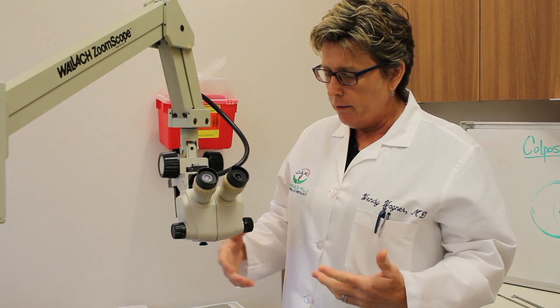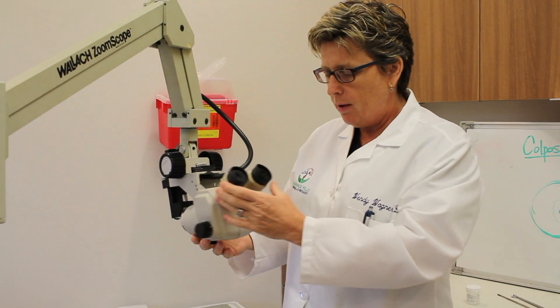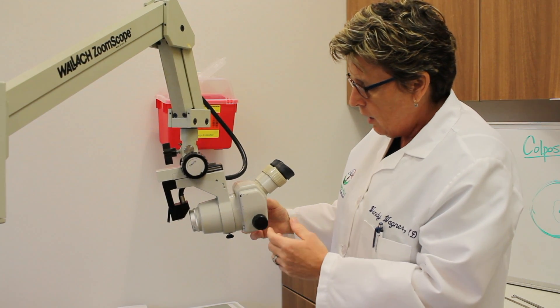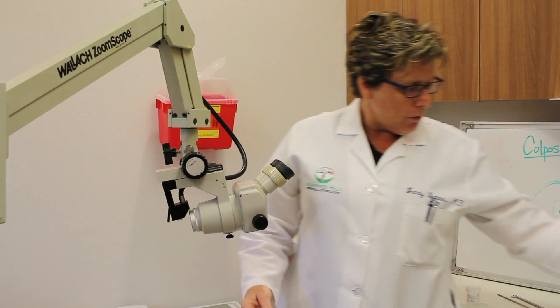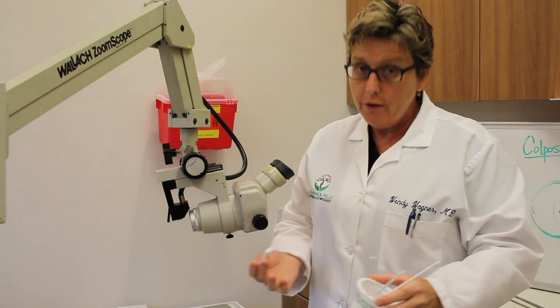Colposcopes look a number of different ways. However, they all have a similar way of working. Basically, it's just magnification. The speculum is put into the cervix. The cervix is wiped off with acetic acid, which is vinegar.